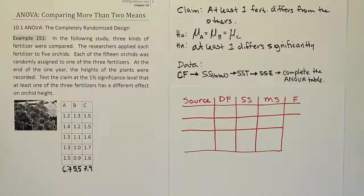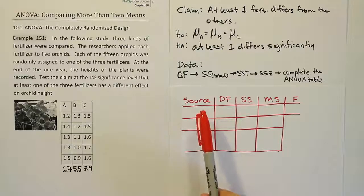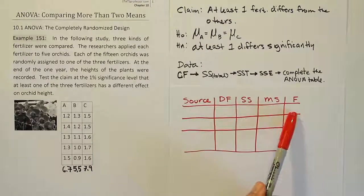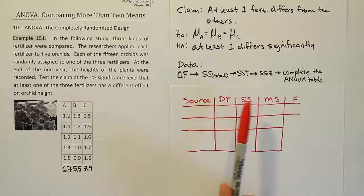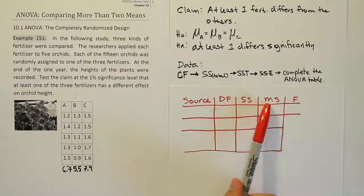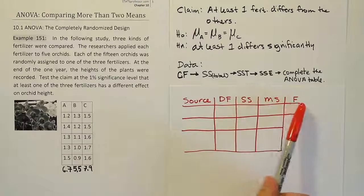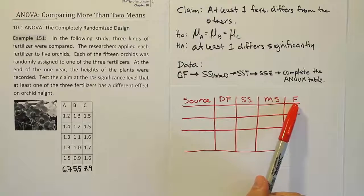Alright, so here's what your ANOVA table will look like. It's going to have 1, 2, 3, 4, 5 columns. The first column is the source column, the second is degrees of freedom, sum of squares, mean sum of squares or mean squares, and then the F value, the F test statistic.